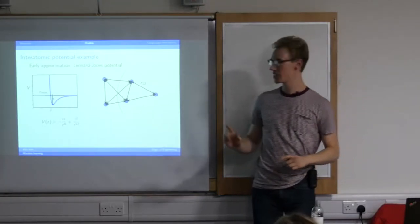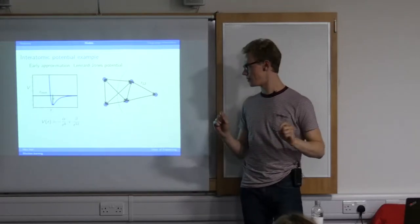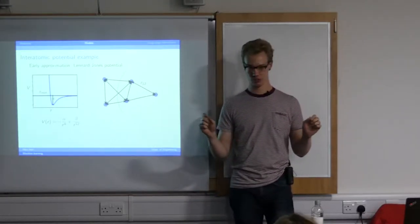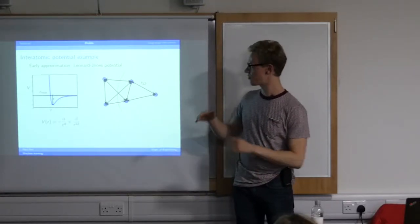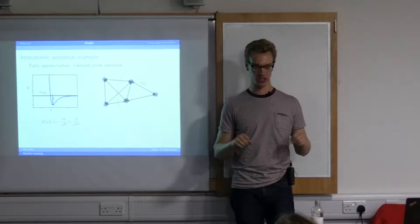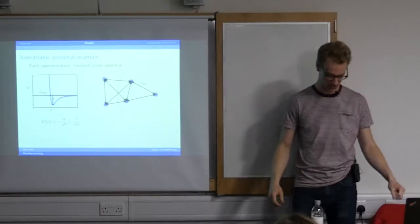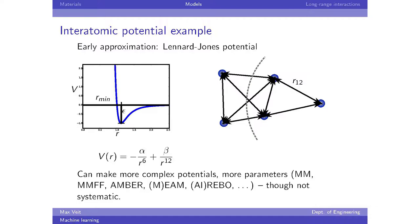So this potential has two parameters. We have the distance r_min at which the particles like to hang out at which this energy is minimal. And we have the depth of the potential well, which is basically the strength of the interaction, how strongly they attract when they're at some distance. So we can make approximations of the quantum mechanical energy by taking these parameters and adjusting them basically until our simulation reproduces the experimental results we are hoping for.